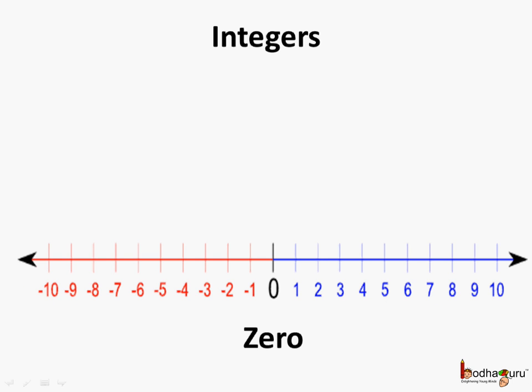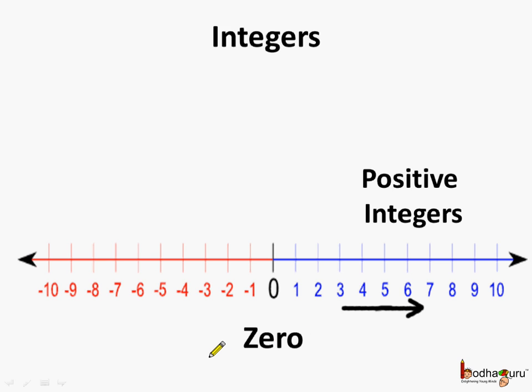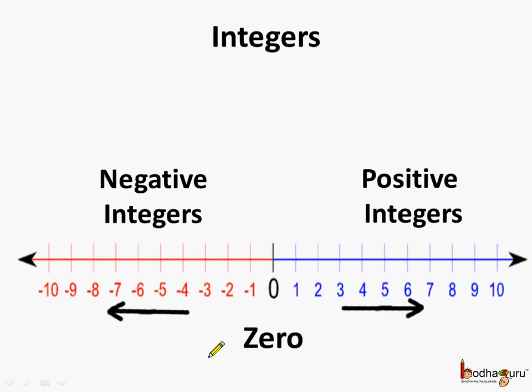This is the representation of integers on a number line. All the positive integers, that is the counting numbers, are on the right side of 0, and all the negative numbers are on the left side of 0.